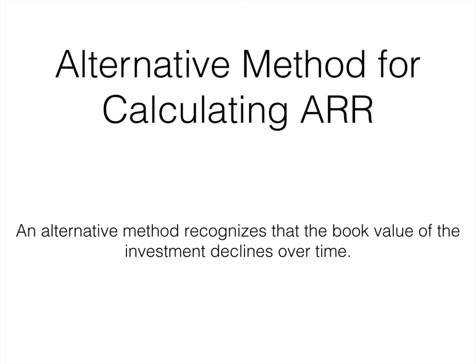There is also an alternative method for calculating the accounting rate of return. The original method produces a lower ARR for two reasons: it uses the net initial investment as the denominator, and it uses income as the numerator, which requires deducting depreciation from annual operating cash flows. This alternative method recognizes that the book value of the investment declines over time, so it produces a higher accounting rate of return.